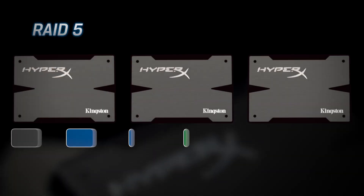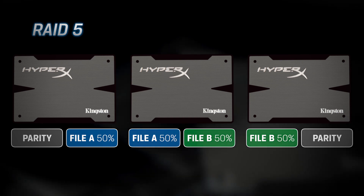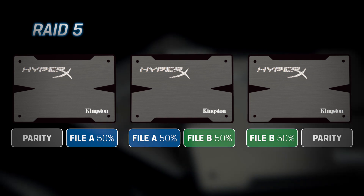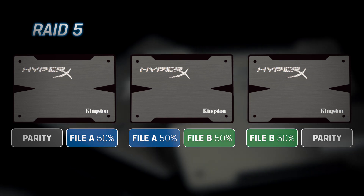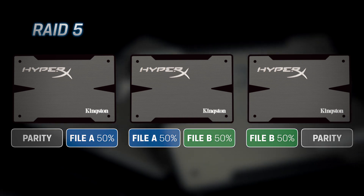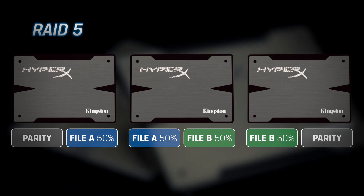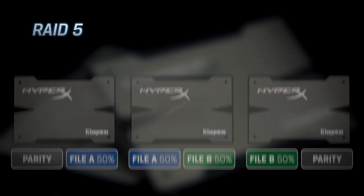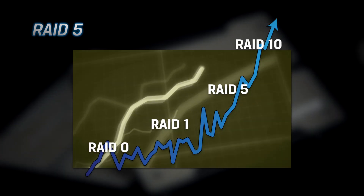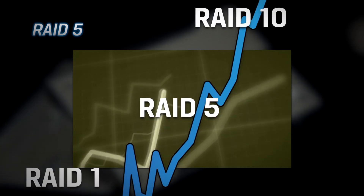RAID 5 is striping with distributed parity. The advantage of RAID 5 is it's cost effective to implement because you only lose the capacity of a single drive, regardless of the number of drives in the RAID group, and you have redundancy in the event of a drive failure.